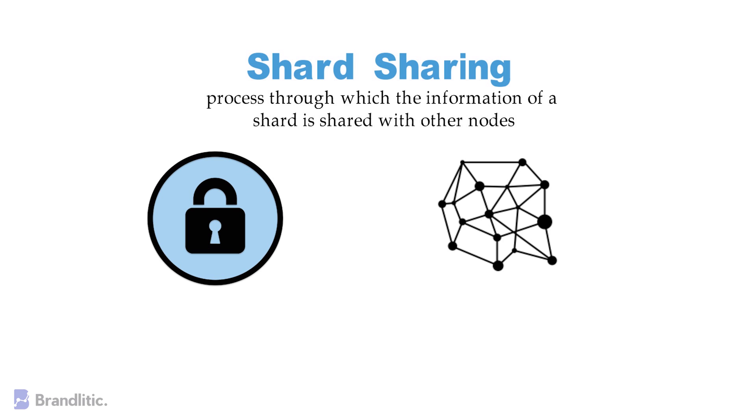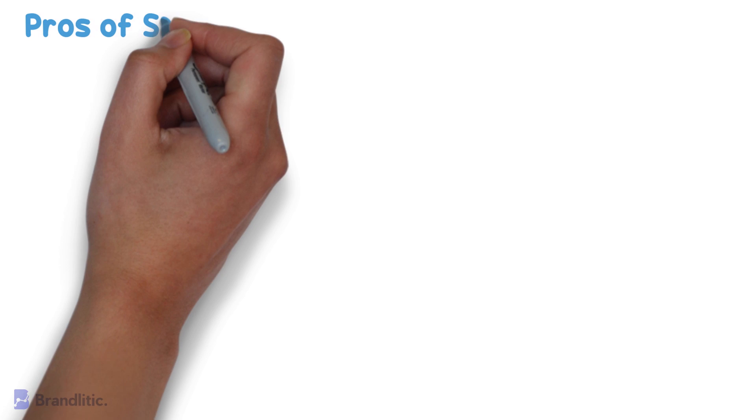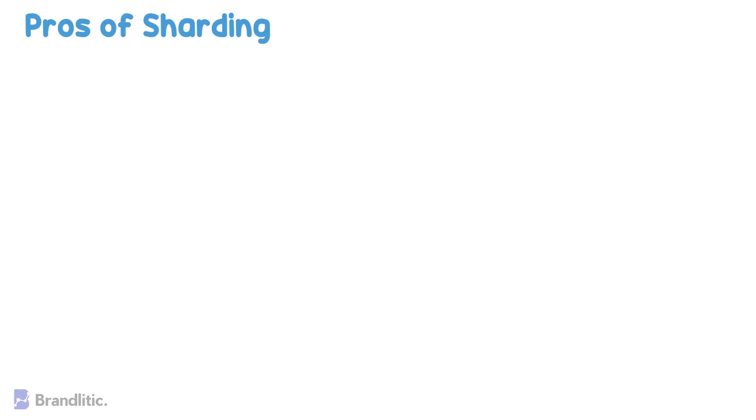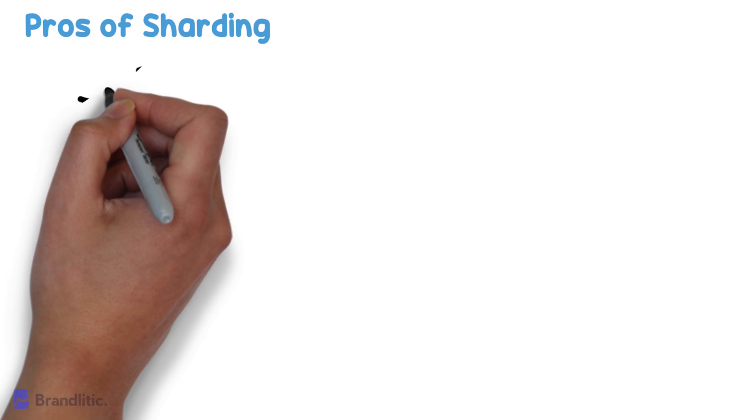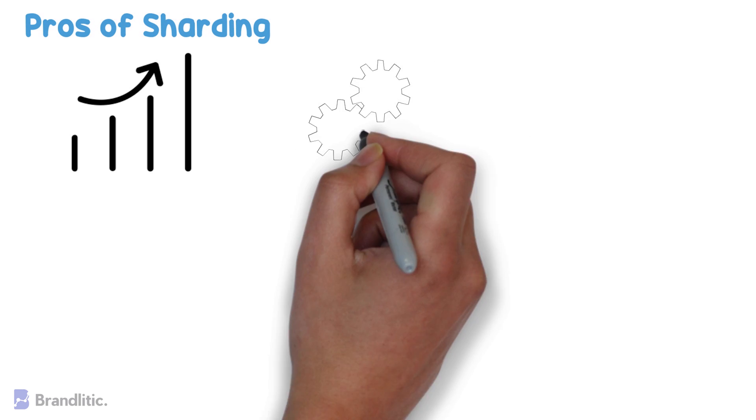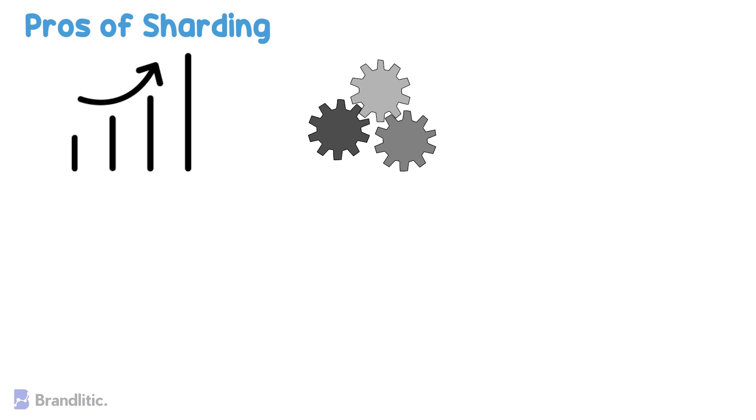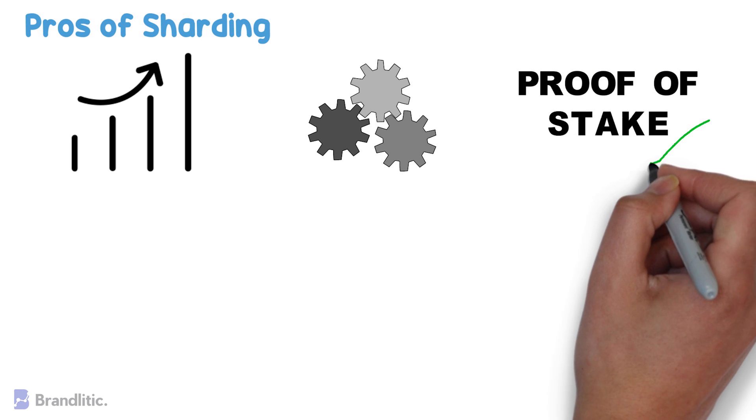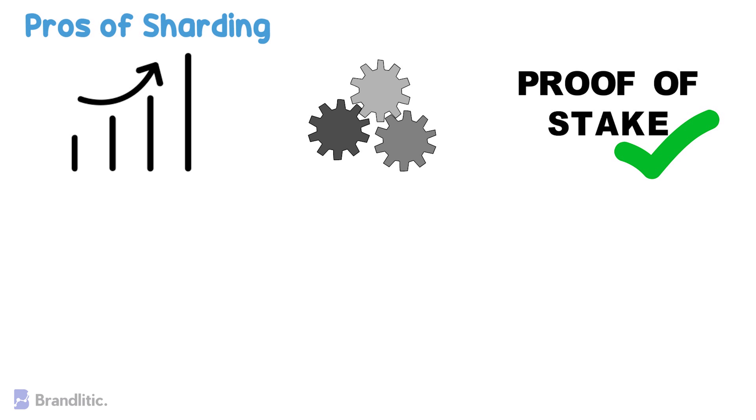Up next, let's quickly look into the pros and cons of sharding. Talking about the pros of sharding: one, it promotes greater scalability of the network; two, it reduces the processing and memory burden placed on full nodes; three, it works well for Proof-of-Stake networks.